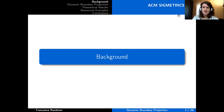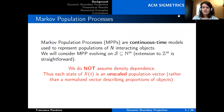Let's start from some background results. We will deal with Markov population processes, which are very common models used to represent populations of interacting objects. In particular, we will focus on Markov population processes evolving on subsets of the lattice of natural numbers. We will not assume density dependence. So when I refer to a state of the process X, I will refer to an unscaled vector in which every component gives the number of objects in a given local state, and not the proportion of objects.